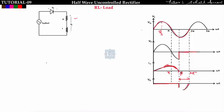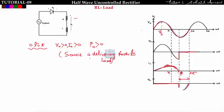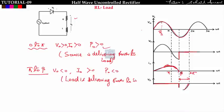The diode is in reverse bias from beta to 2π + (π − beta) — that is, for the angle (2π − beta). From a network point of view: from 0 to π, output voltage V0 is positive and i0 is positive, so output power P0 is positive — the source is delivering power to the load. From π to beta, V0 is less than zero and i0 is greater than zero, so P0 is negative — the load is delivering power back to the source.